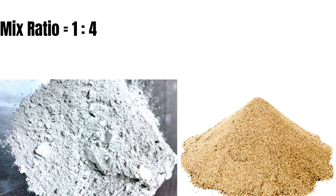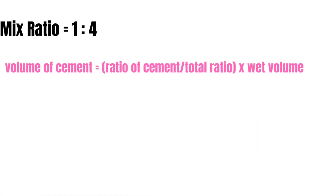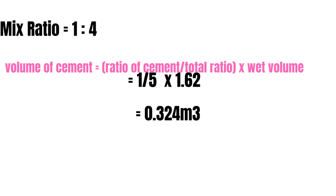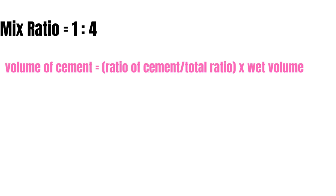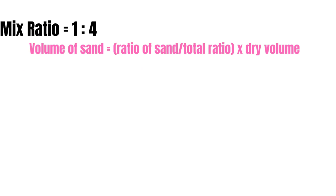The volume of cement will be the ratio of cement divided by the total ratio, multiplied by the dry volume — that is 1 (the ratio of cement) divided by 5, then multiplied by 1.62 (the dry volume) — which equals 0.324 cubic meters.